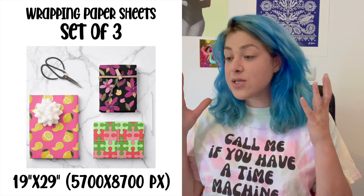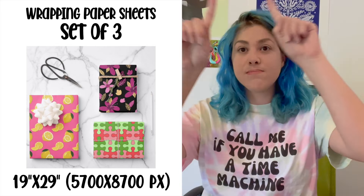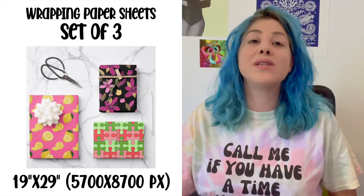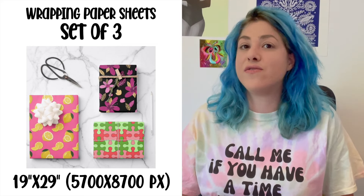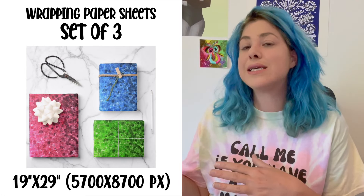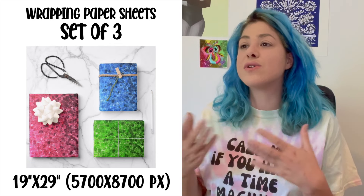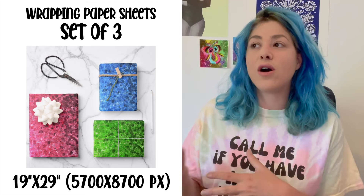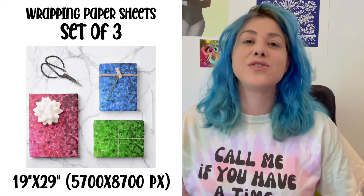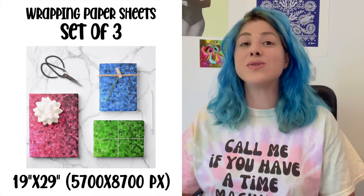First, the wrapping paper flat sheet set of three — it's a 19 by 29 inch piece of paper that repeats itself three times. You can design all three to be the same or have different designs, thinking about the same color palette or the same theme — for example, a set for Halloween, Christmas, baby showers, or hobbies with different polka dots or plaids in different colors.